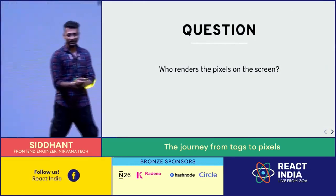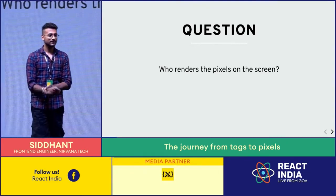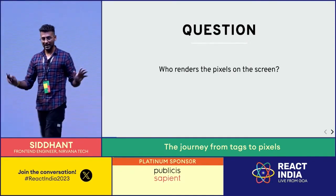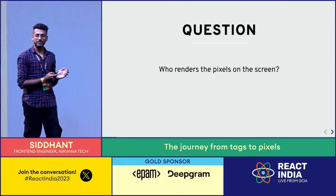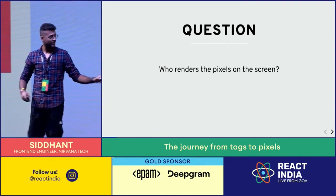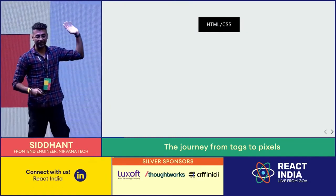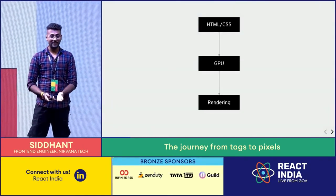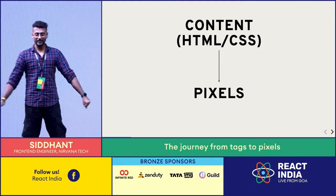Quick question again - who renders the pixels? Which part of the computer renders pixels on the screen? The answer is GPU, correct. So our main goal as we understand Blink is: how do we convert HTML tags to correct GPU calls, and GPU will handle the rest because that is where the hardware part comes in. We are sitting at the level of writing React, which gets converted to HTML, CSS, and JavaScript, and we have to make correct GPU calls - that is how we get pixels on screen.